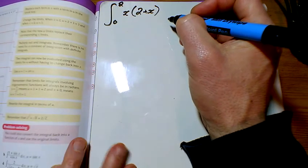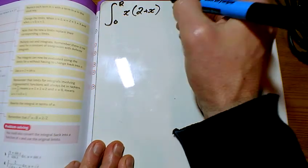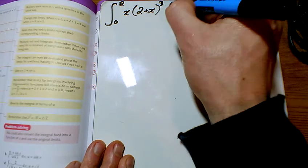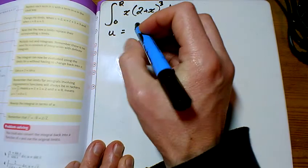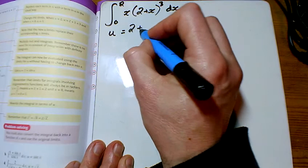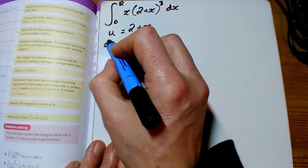Question 2b, we're going to integrate x times 2 plus x cubed dx, and we're being told that u is equal to, as expected, the bit in the bracket there, 2 plus x.